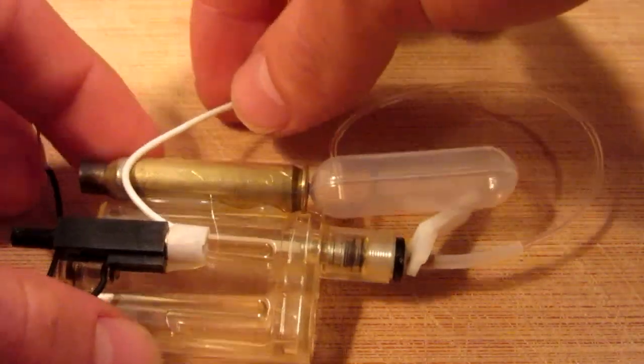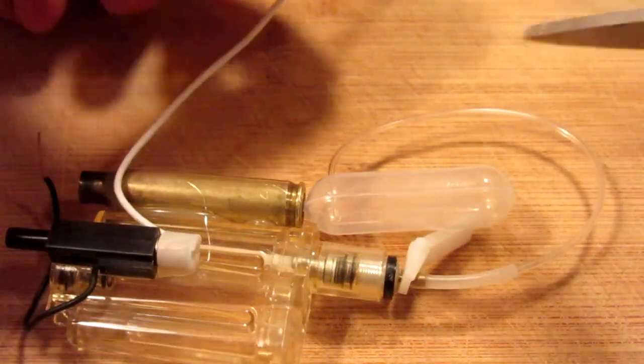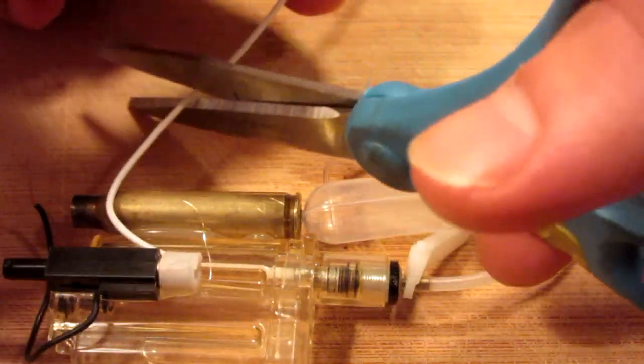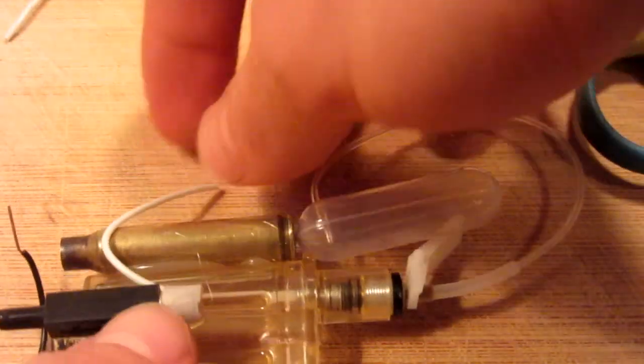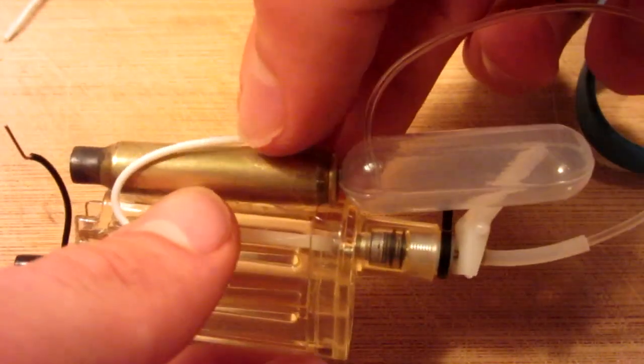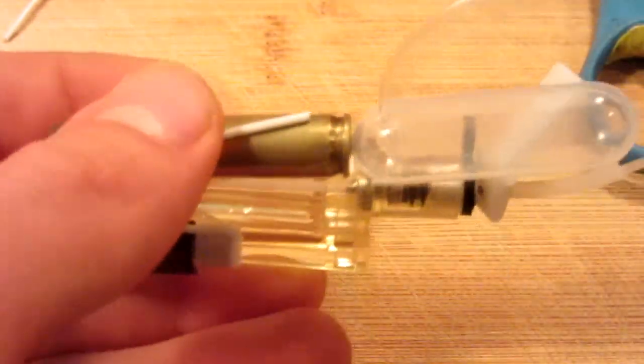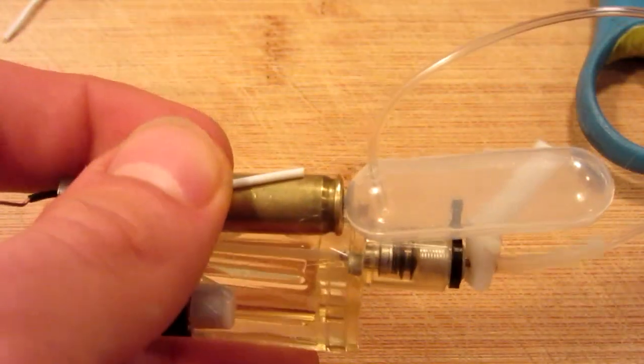Now for the wires on the sparker, we're going to go ahead and ground the white one to the shell. To do that, just cut off most of the wiring, and then we're going to strip it. Then simply tape it straight to the brass shell casing, which will ground the entire shell.